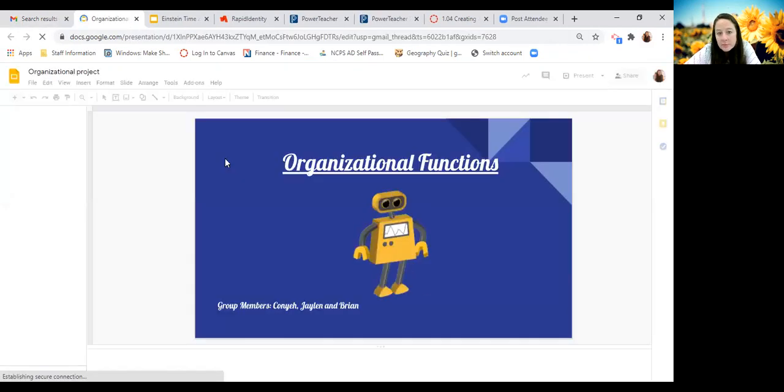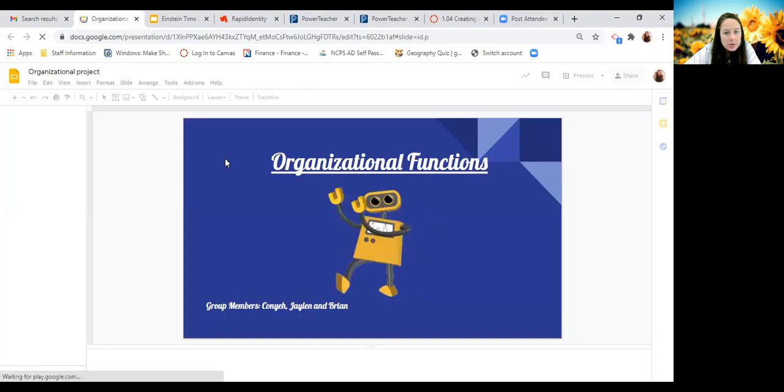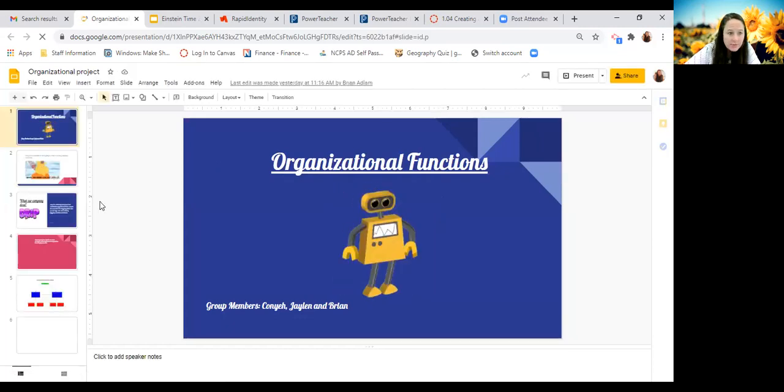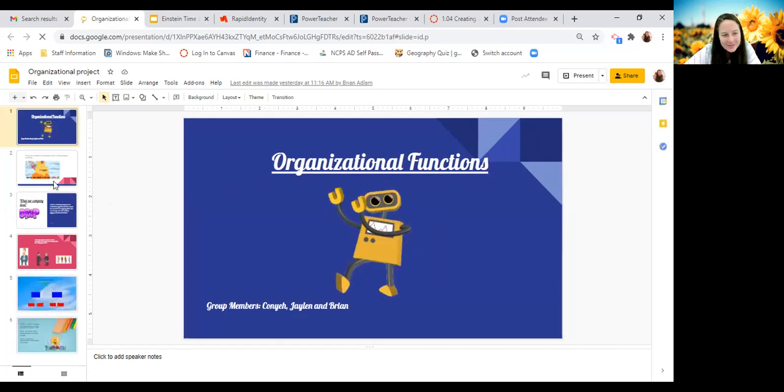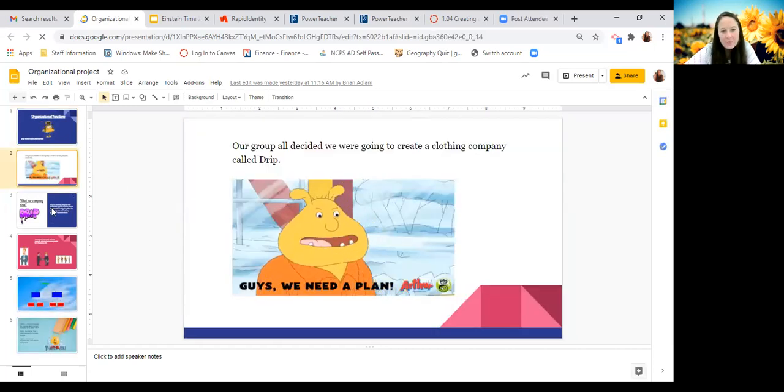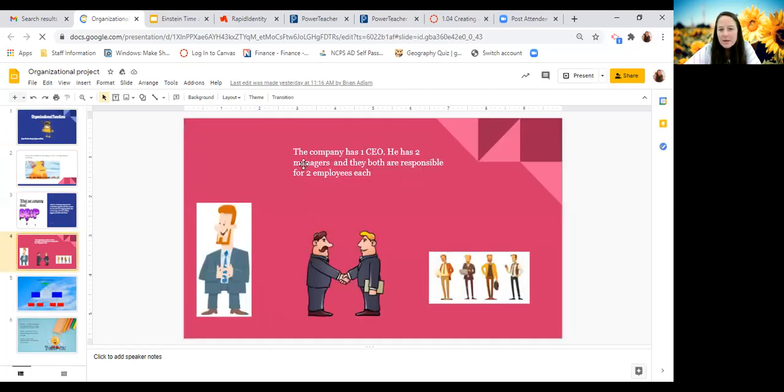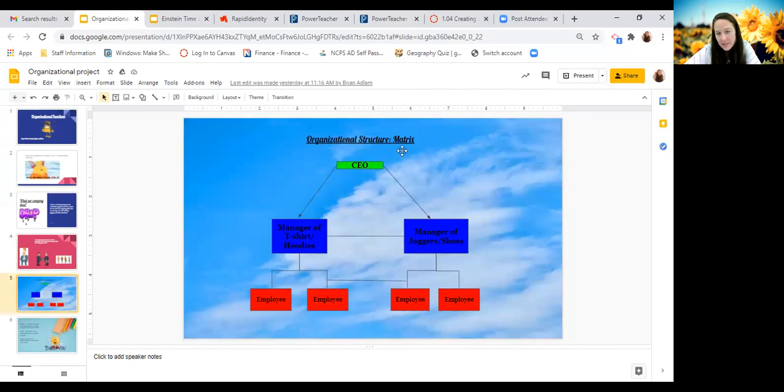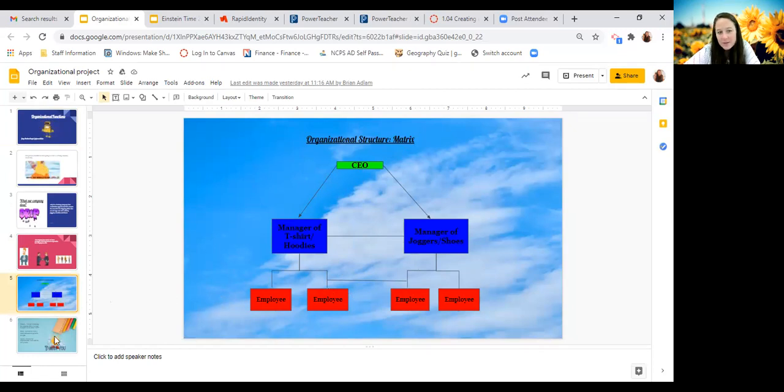And I can show you an example really quick. Brian's group went above and beyond. As you can tell, they created a whole presentation. So title, of course, their company, company's name is Drip, what they do, how many employees they have, and then this is what I'm looking for. They said they've got a matrix structure and they've got a CEO. These two managers, they work side by side and the flow authority goes up and then they've got employees under them and then they report to those managers and report to each other as well. So that's what I was looking for. And they just told me which group member did what.